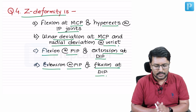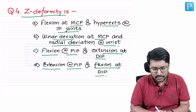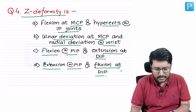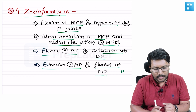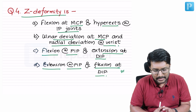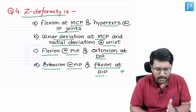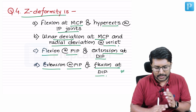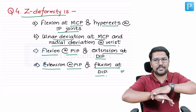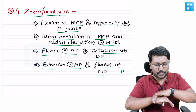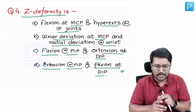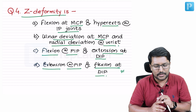Is it the extension of proximal interphalangeal joint and flexion of the distal interphalangeal joint — that is option B — or is it flexion of PIP and extension of DIP, option C? Or is it ulnar deviation at metacarpophalangeal joint and radial deviation at wrist, or flexion of metacarpophalangeal joint and hyperextension of interphalangeal joint?